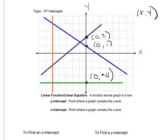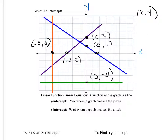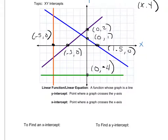If I look at all of my y intercepts, notice they all have something in common: every single y intercept has an x value of 0. Looking at my x intercepts — I go back 5 and up 0, back 3 and up 0, and forward about 1.5 and up 0. Every single x intercept also has something in common: they all have a y value of 0.